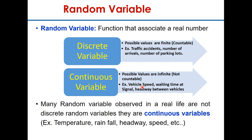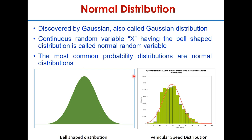For example, vehicle speed. If you measure the speed of a vehicle accurately, it will never be exactly 80 km/h — it will be 79.8 or 80.2 or 80.3 and so on. Waiting time at signals and headway between vehicles are all continuous variables. Normal distribution was discovered by Gaussian and is therefore also called Gaussian distribution.